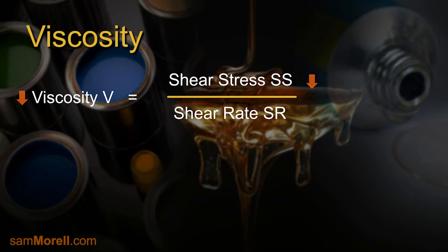Alternatively, if we achieve a higher shear rate from a given shear stress, the denominator is larger and therefore the viscosity must be lower. Conversely, if we achieve a lower shear rate from a given shear stress, the denominator is smaller and therefore the viscosity must be higher.